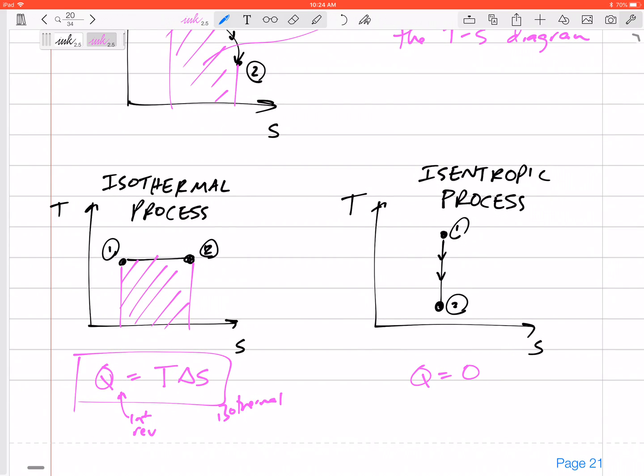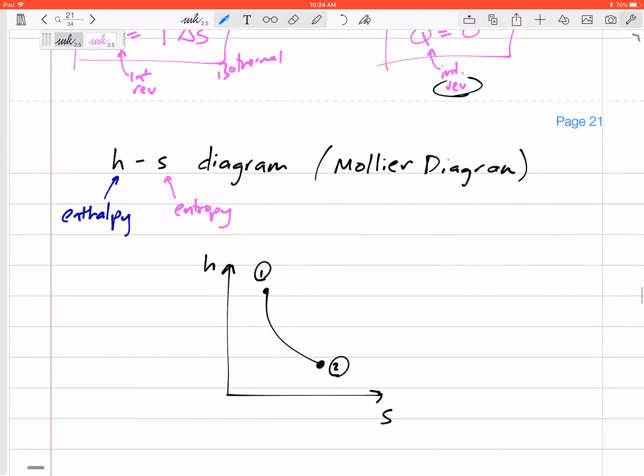But we already knew that. Q is zero for, and this is the internally reversible Q. We already knew that if we're talking about reversible and isentropic, then we know it's adiabatic. So that's just another way to show that it's adiabatic. So these TS diagrams are interesting.